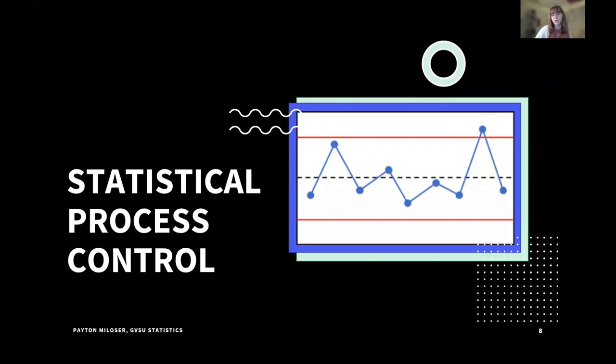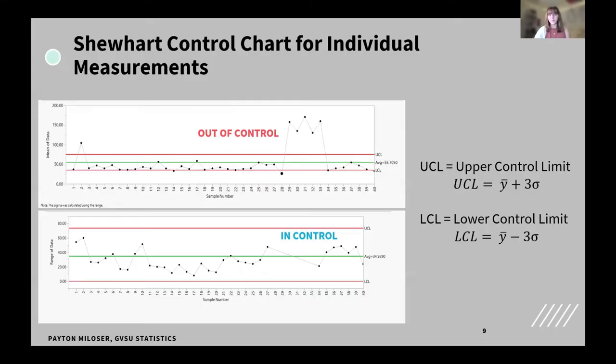When we look at statistical process control, then these are going to be our control charts. This is the specific type of graph I'll be using for my research. We are specifically using the Shewhart control chart for individual measurements.